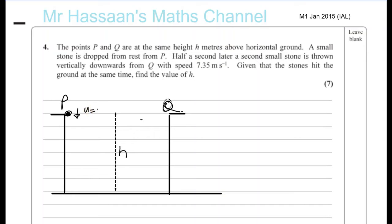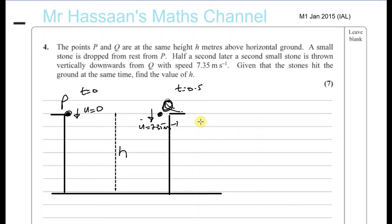Its initial speed is zero — that's when time equals zero. Then half a second later, so when T equals 0.5, a second small stone is thrown vertically downwards from Q with a speed of 7.35 meters per second. Given that the stones hit the ground at the same time, find the value of H.